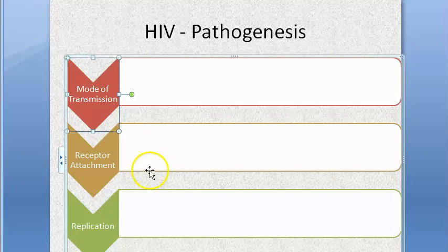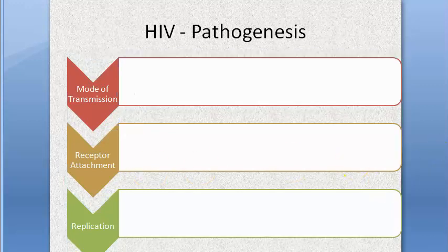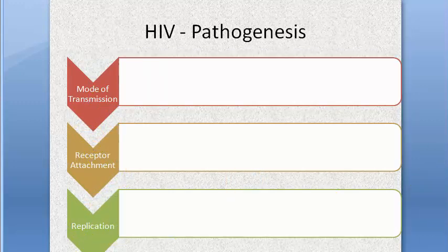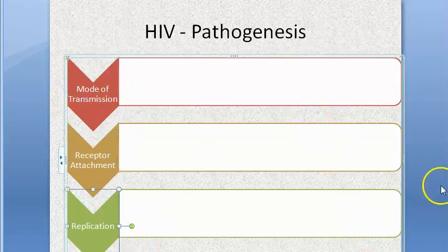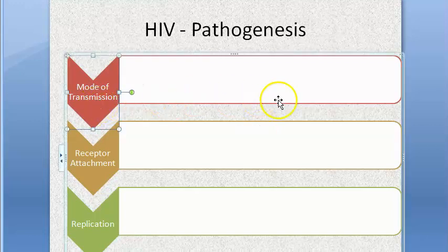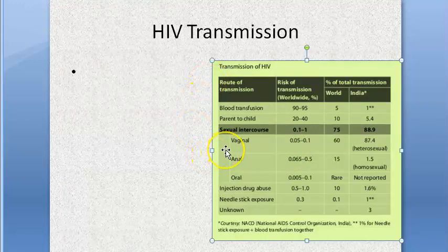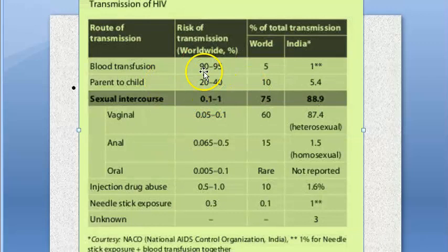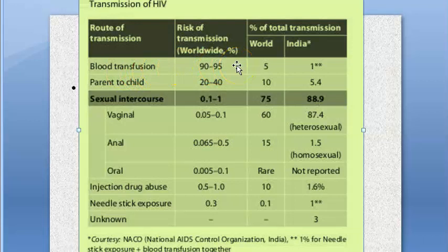Pathogenesis covers three main areas: modes of transmission, receptor attachment, and replication. For modes of transmission, referring to the NACO diagram: the highest risk is blood transfusion, followed by parent-to-child transmission.